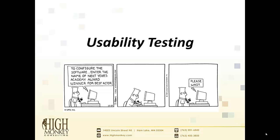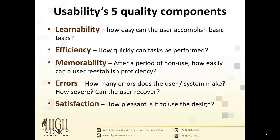You may remember from the first video, we talked about some heuristics, including these five quality components: learnability — how easy is it for a user to figure out how to do something? Efficiency — how quickly can they get that task done? Memorability — after they haven't done it for a while, can a user remember how? Errors — what happens if they receive an error, can they recover, and how severe are they? And satisfaction — how pleasant is it to use?